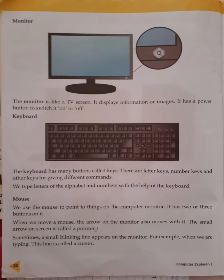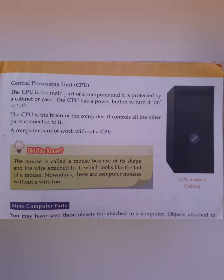Then CPU. The CPU is the main part of a computer and it is protected by a cabinet. Whenever you go to a computer lab, you will see the CPU protected with a cabinet. There are power buttons on the CPU to turn on the computer. The very important point is the CPU is the brain of the computer — it controls all the other parts connected to it. CPU is the very important part of the computer.